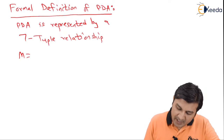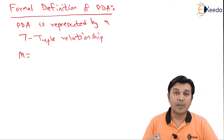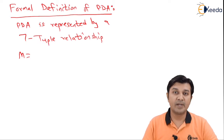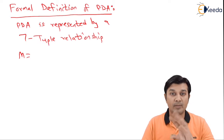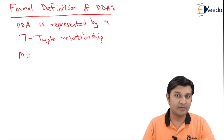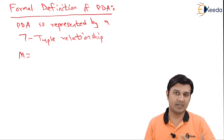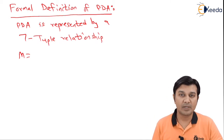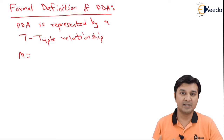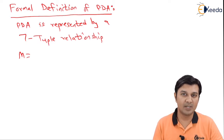A PDA is represented by a 7-tuple relationship. Up till now, the different types of automata that we studied were represented only by a 5-tuple relationship. This is the first time we are encountering a 7-tuple relationship. This tuple representation has increased only because of the addition of a special data structure called a stack.